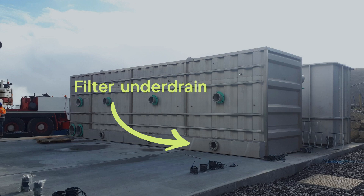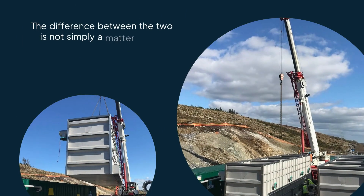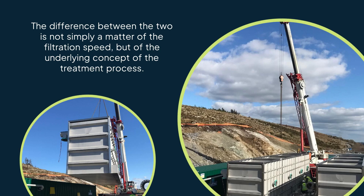The under drain also ensures uniform distribution of air and water during backwashing. What's the difference between a rapid gravity filter and a slow sand filter? The difference between the two is not simply a matter of filtration speed, but of the underlying concept of the treatment process.